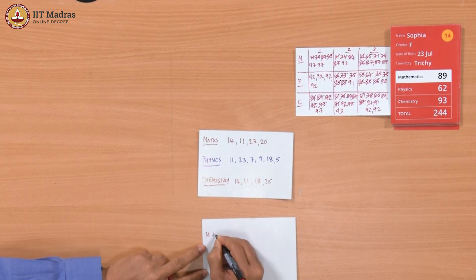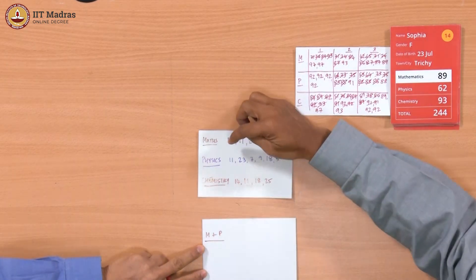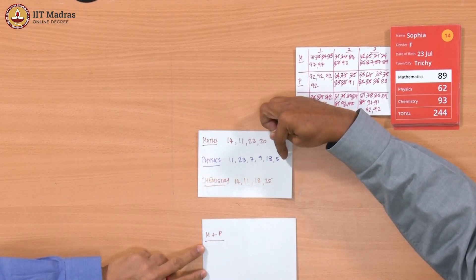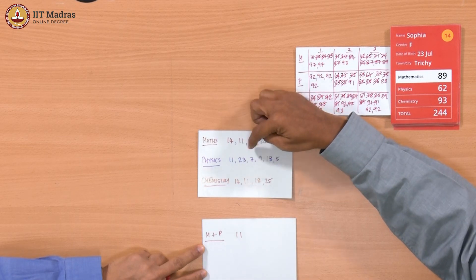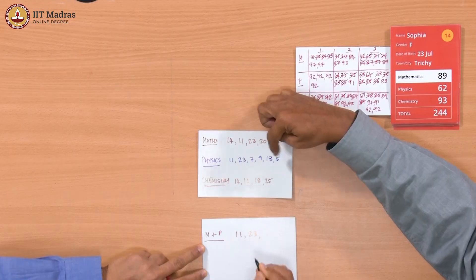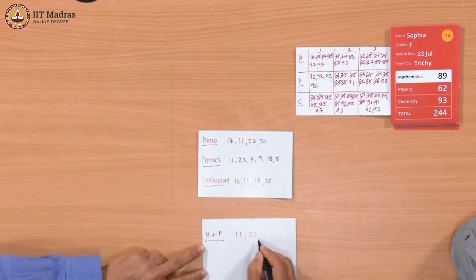Let us do that because there is no point in looking for somebody in all three if they are not in 2. So first we will do maths plus physics. Maths intersection with physics. Which means that you go through all the maths. 14, is it there? It is not there. 11, yeah, so 11 is in there. 23, 23 is there. 20, not there. So we have got 2 people who are in maths plus physics.